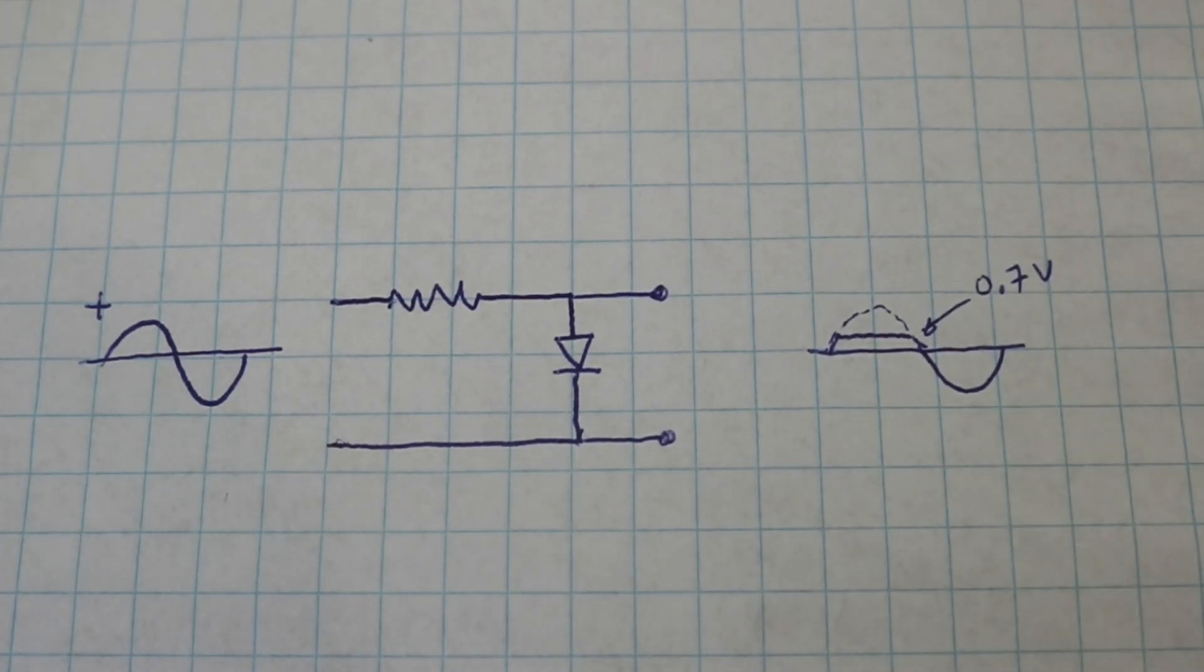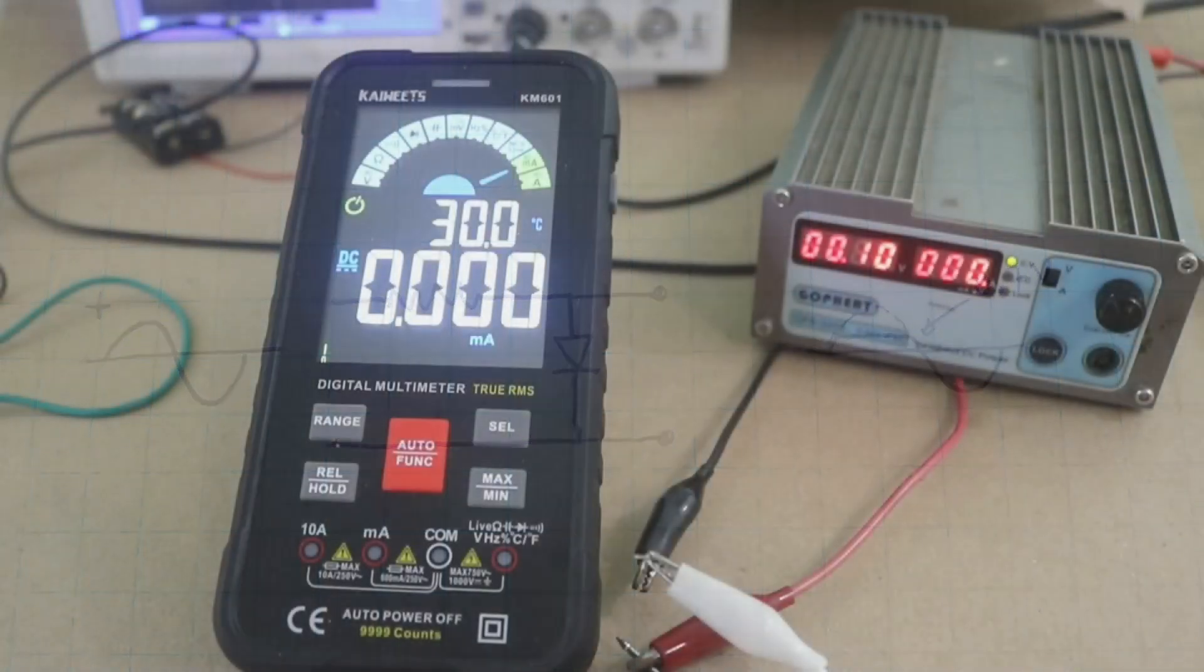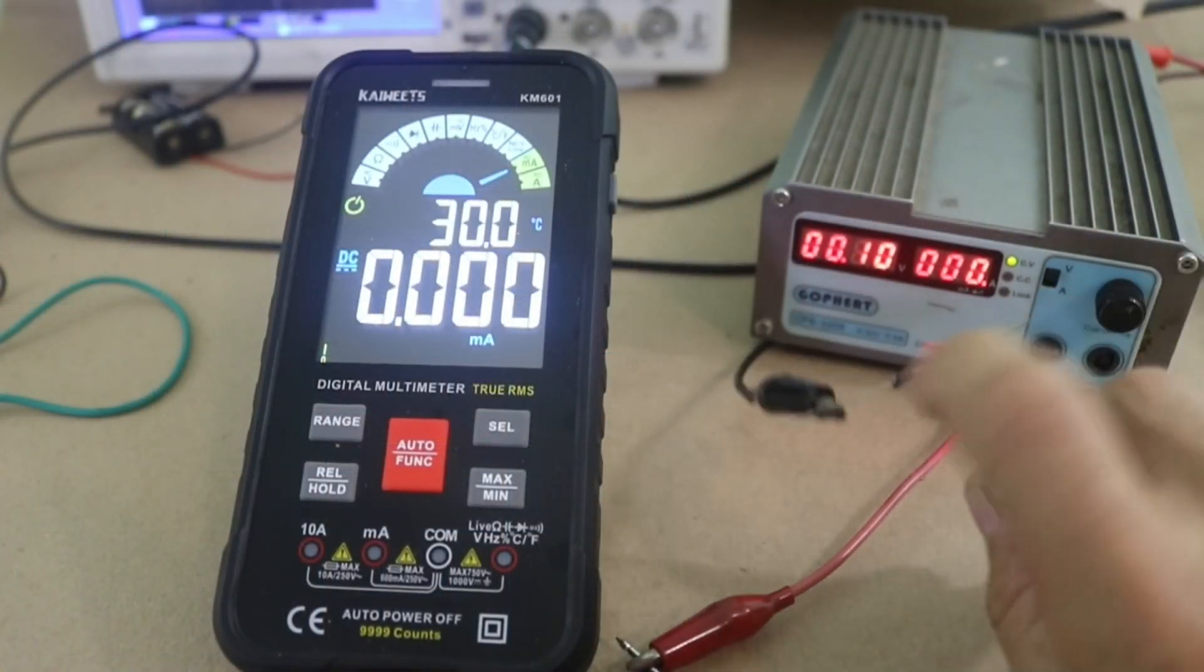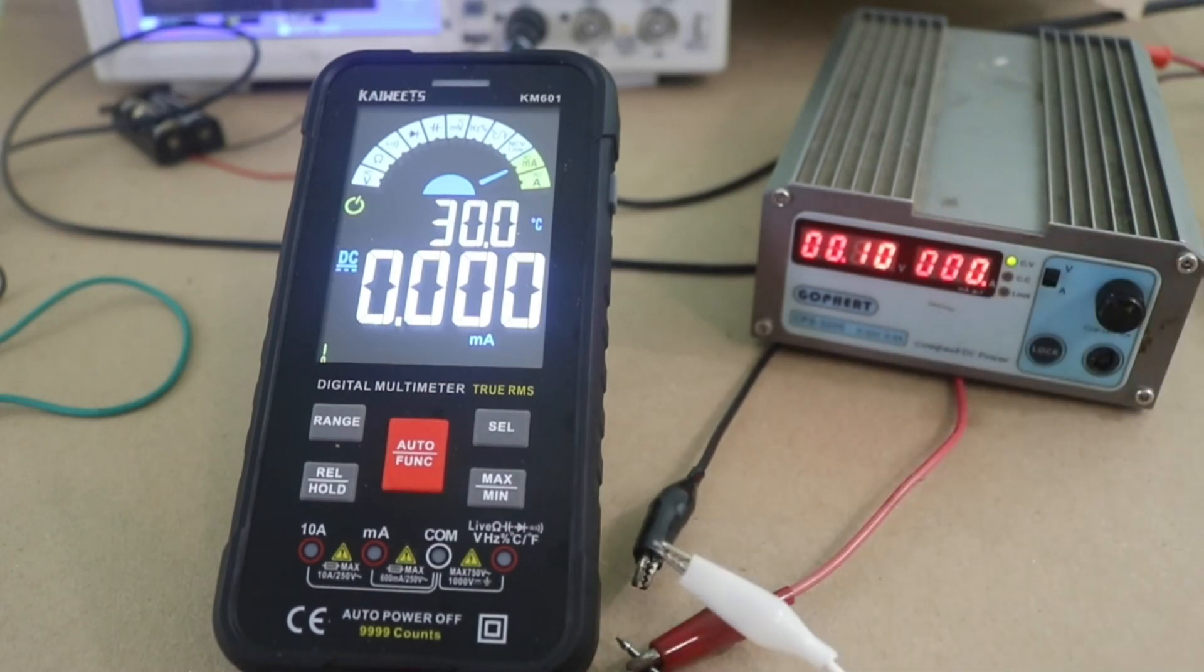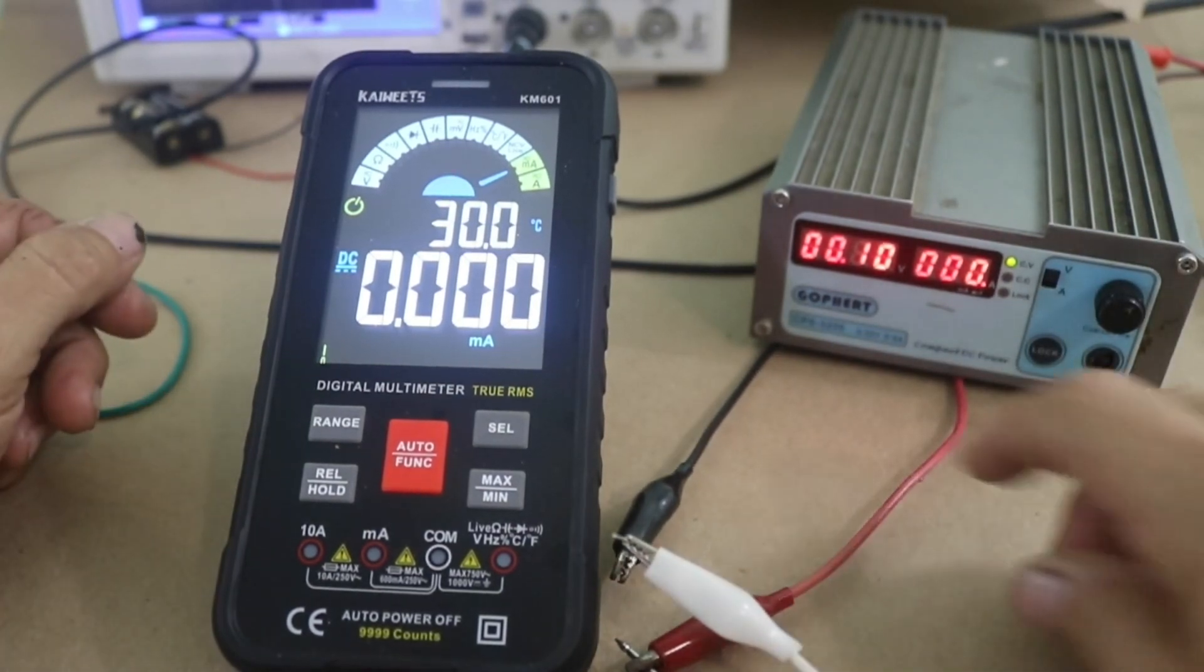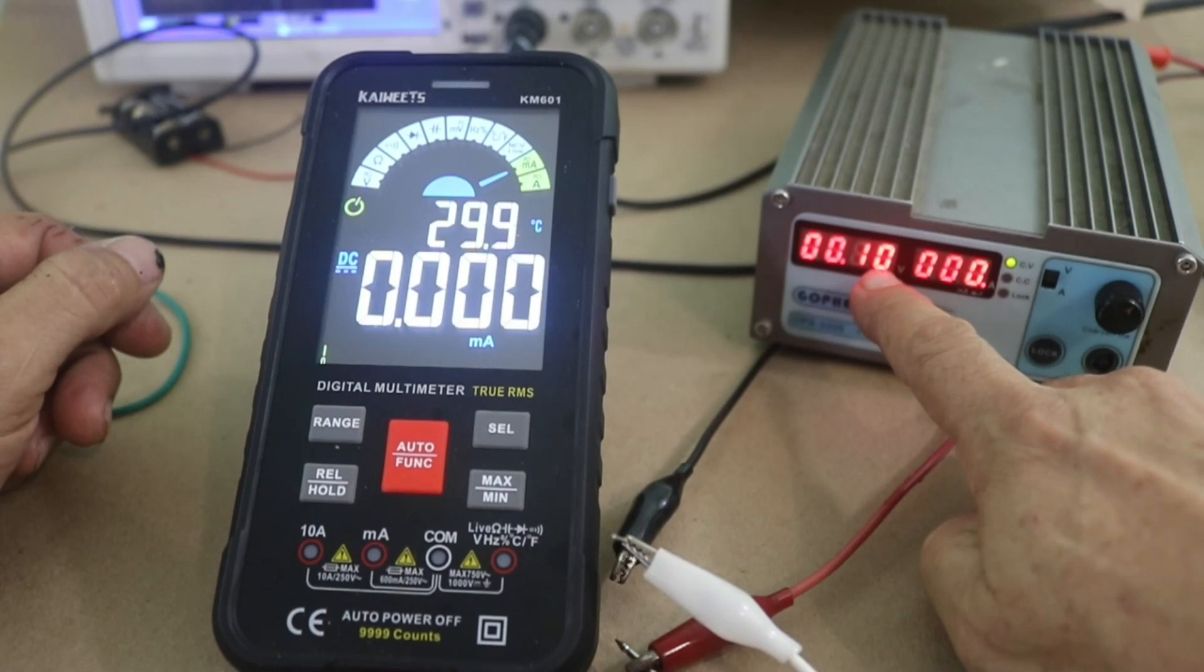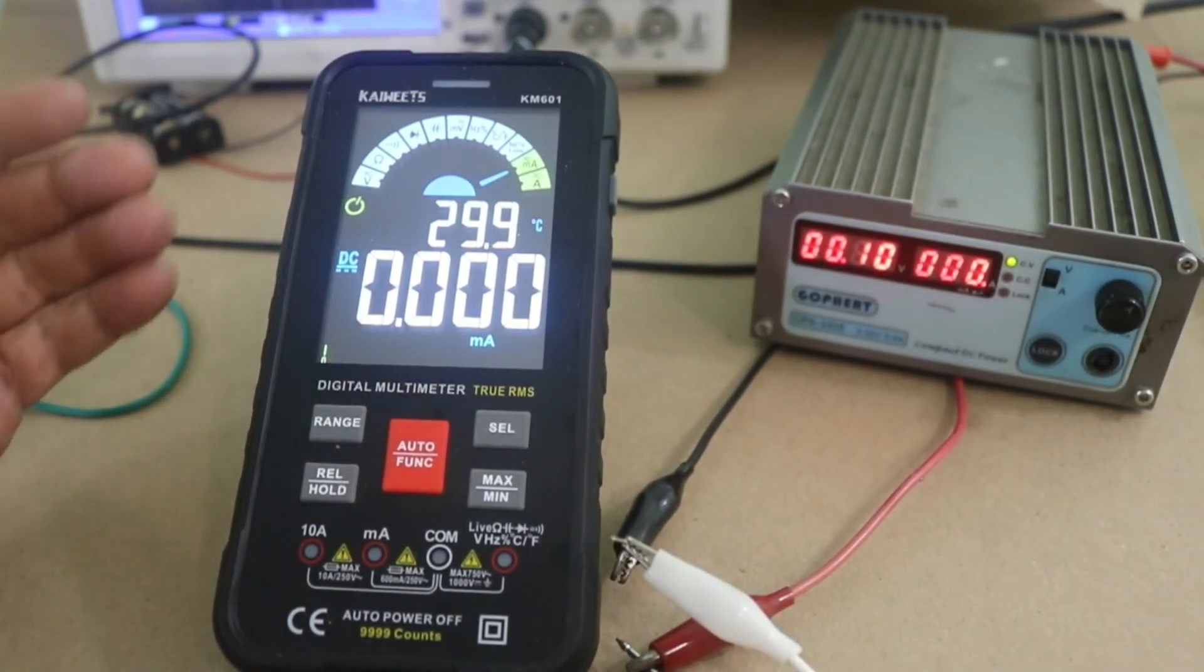Let's now see this behavior in the oscilloscope. Here I have the diode connected with the polarity in such a way that it will conduct the current. Let's start at 0.1 volts and here at the multimeter we see that there is no current flow.